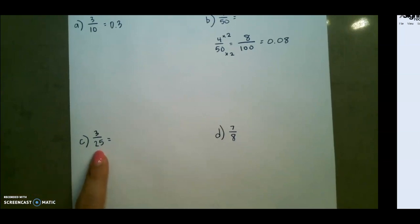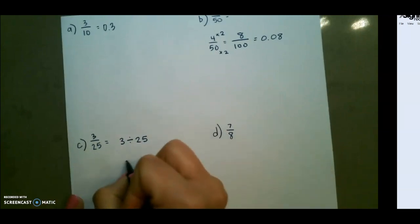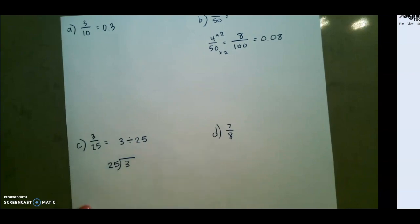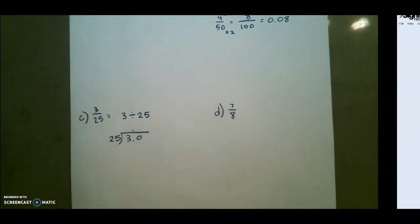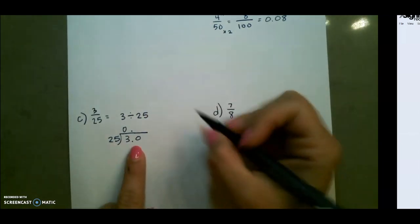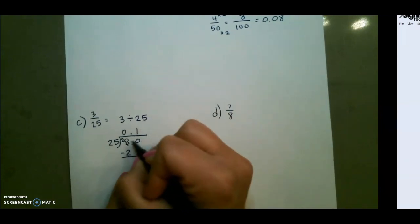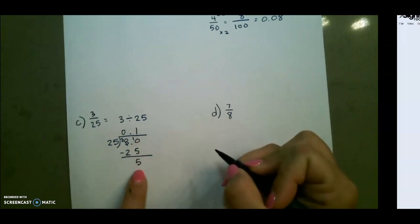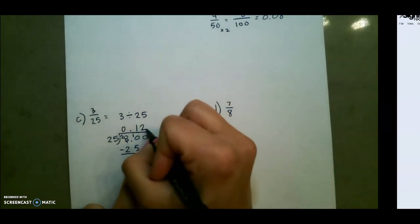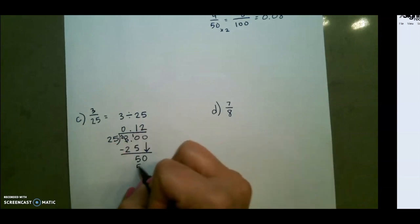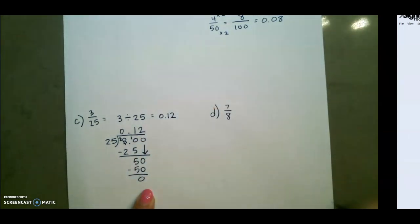For our next example: 25 is not a multiple of 10, so I'm going to use division — numerator divided by denominator. Since 25 cannot go into 3, I'm going to add a decimal and a 0. Always remember to bring your decimal straight to the top. 25 goes into 30 one time; 1 times 25 is 25, and we subtract: 30 minus 25 is 5. Add another 0 and bring it down. 25 goes into 50, 2 times; 2 times 25 is 50. Since I have 0 at the bottom, my answer is 0.12.